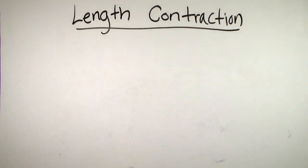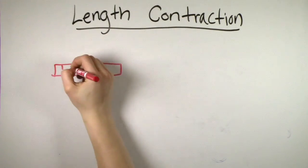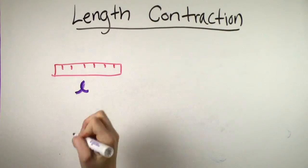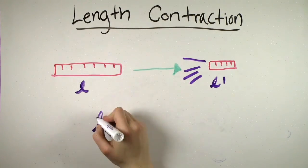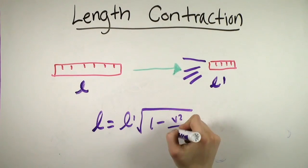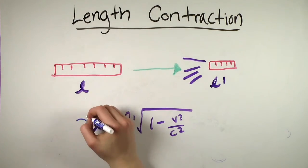The reason that we have to specify proper length is due to a key principle of relativity known as length contraction. In essence, length contraction means that if an object is traveling very, very fast relative to you, its length in your frame of reference is shorter than its proper length. The amount that the object contracts is proportional to how fast it's traveling relative to the observer, as seen in this equation.